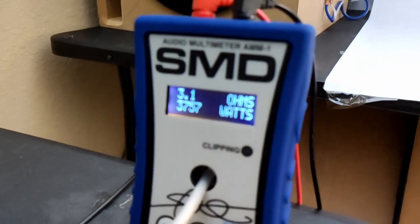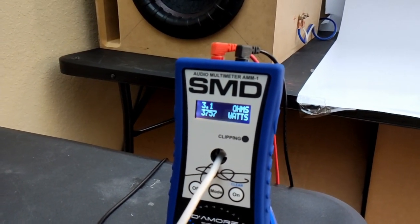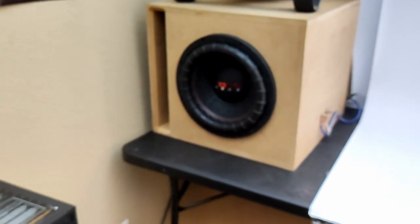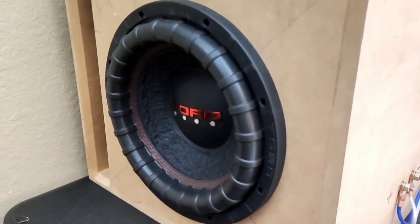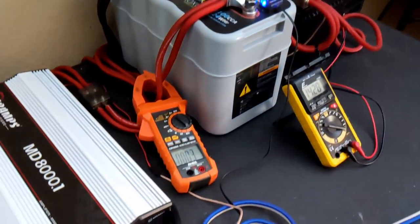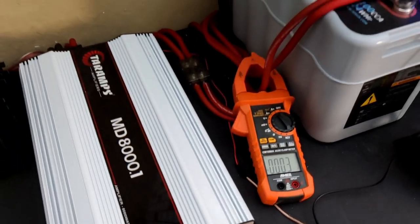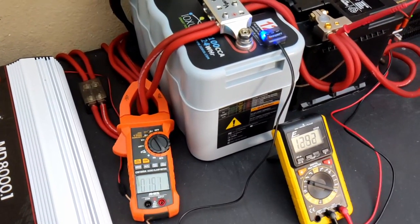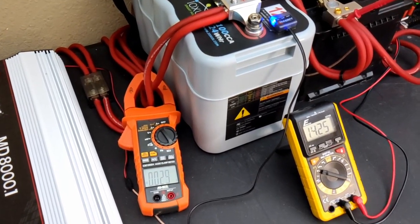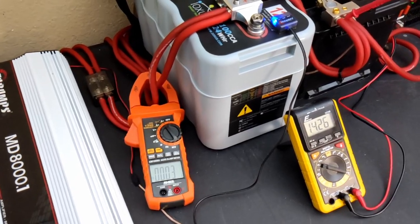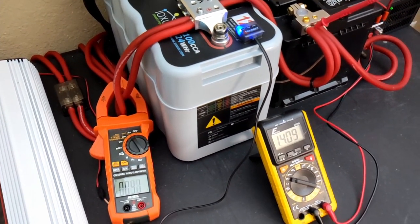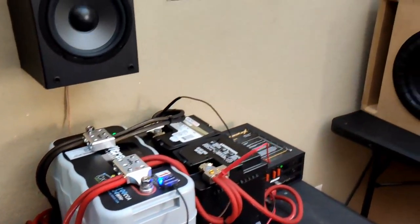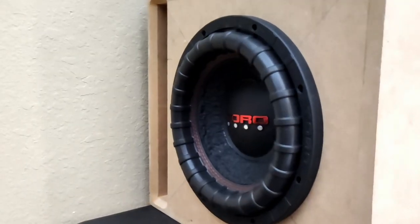In case you guys are wondering. That's the real world power. We got at 3.1 ohms, we put 3700 watts. And that's the Toro Force 12S taking it. It don't smell, it don't get warm or nothing. That thing there is a beast. So we're going to once again get this going all the way up to clipping guys.